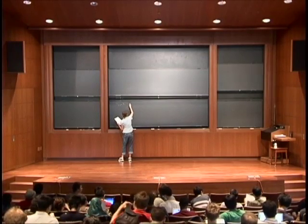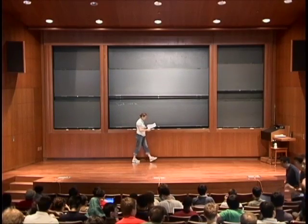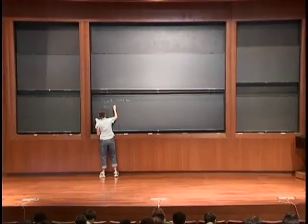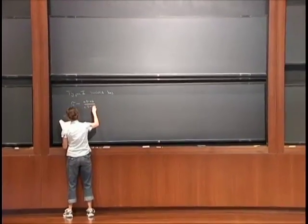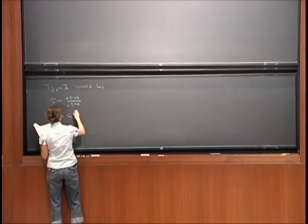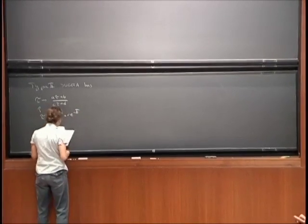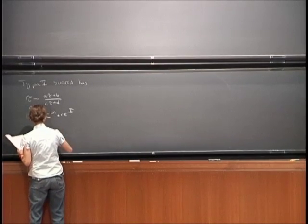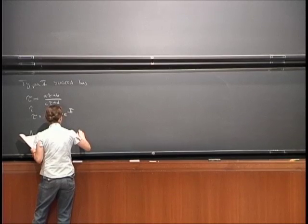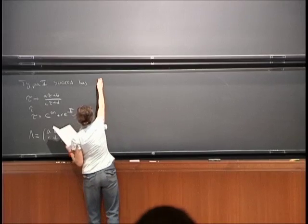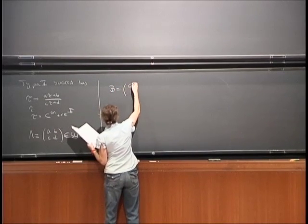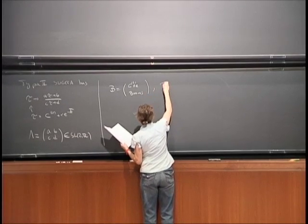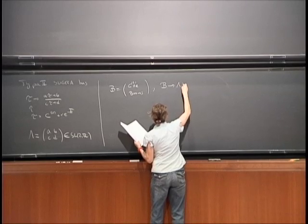Type IIB supergravity has an SL(2,R) symmetry acting on the fields: it sends τ to (aτ + b)/(cτ + d), where τ is a complex field combining the Ramond-Ramond zero-form and the dilaton. We define an SL(2,R) matrix λ with entries a, b, c, d, while the two-forms transform like a doublet: b gets shifted to λ times b.